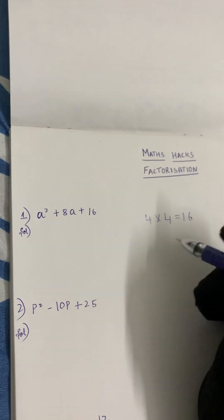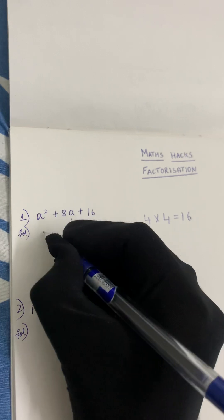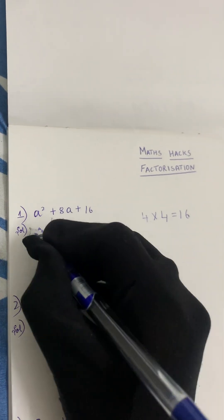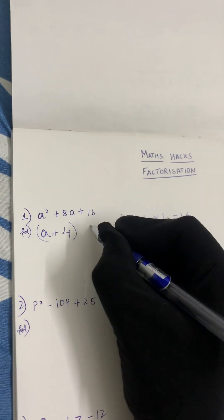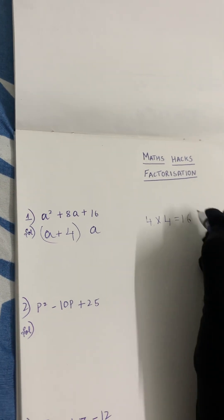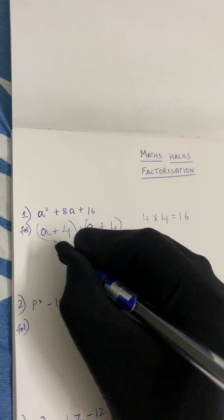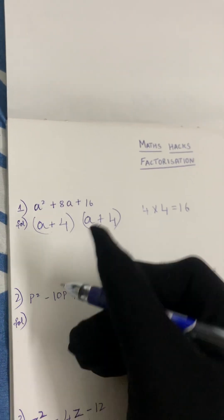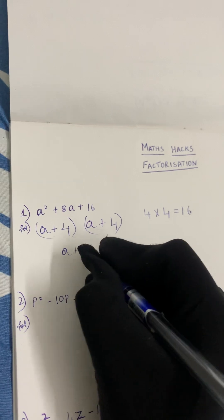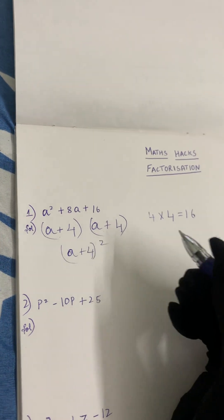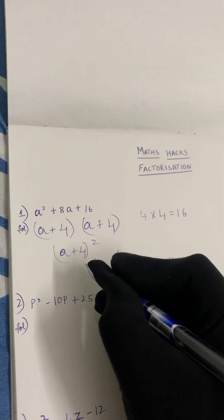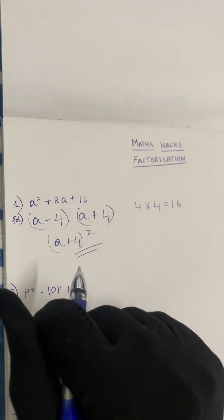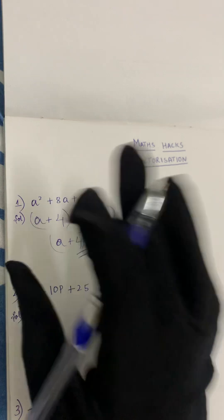If we add these two numbers we will get 8. So let's take a plus 4 in a bracket, and another a plus 4 in a bracket. Instead of writing this twice, we will write a plus 4 once and put a square. So a plus 4 whole square is the final answer.